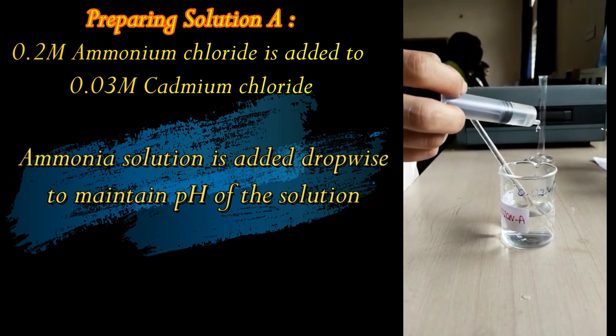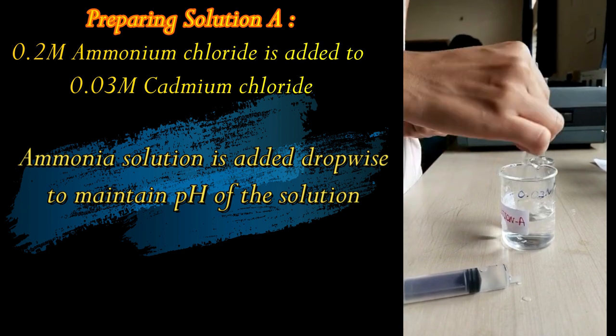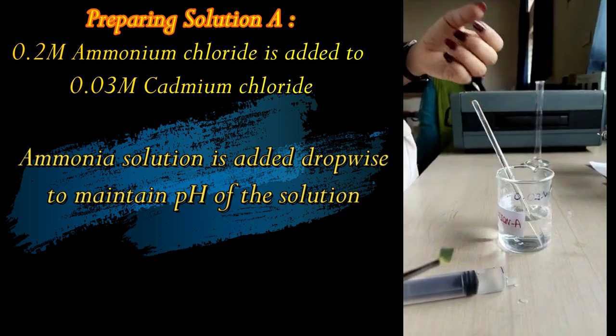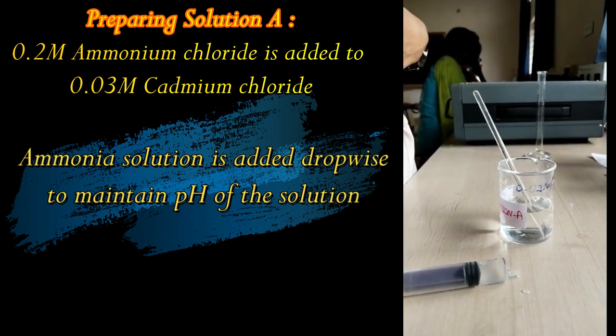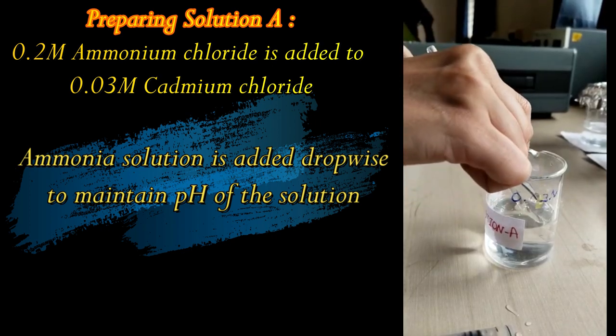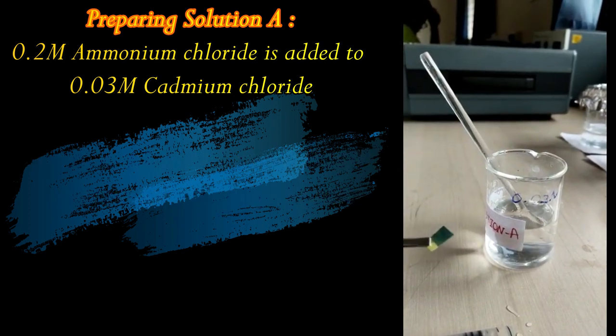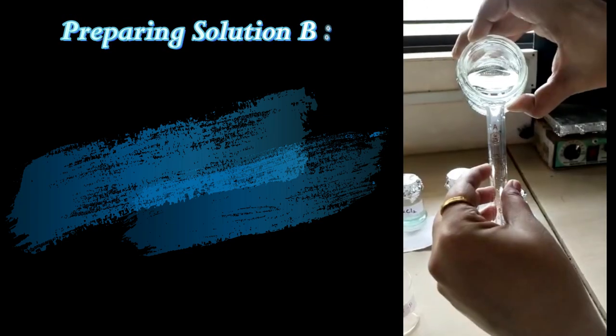Maintaining the pH of the solution is a main criteria for getting a uniform thin film. For CdS thin film, another source is the sulfur source. For that we are going to prepare solution B, where thiourea acts as a sulfur source.